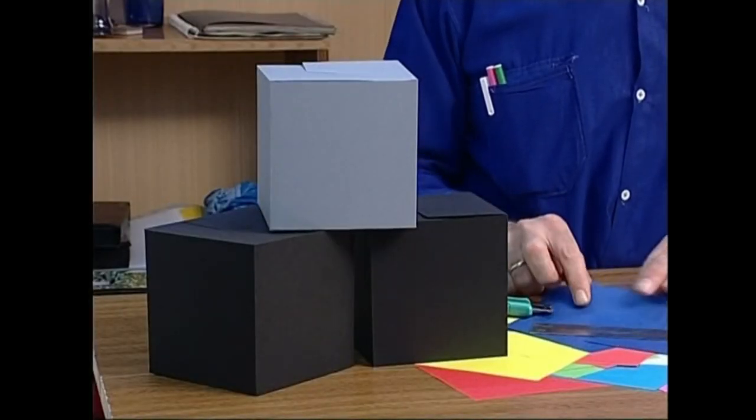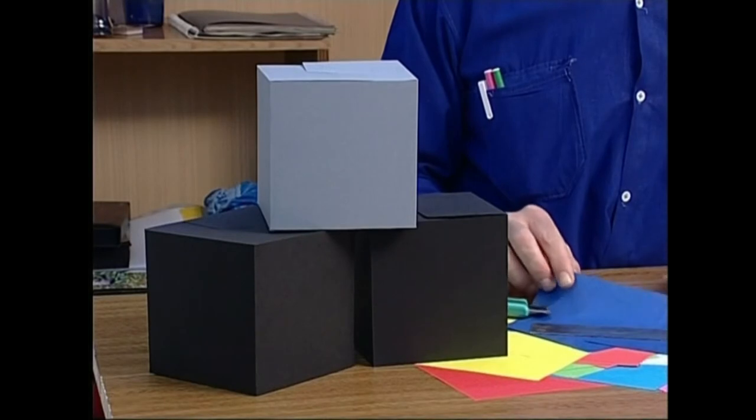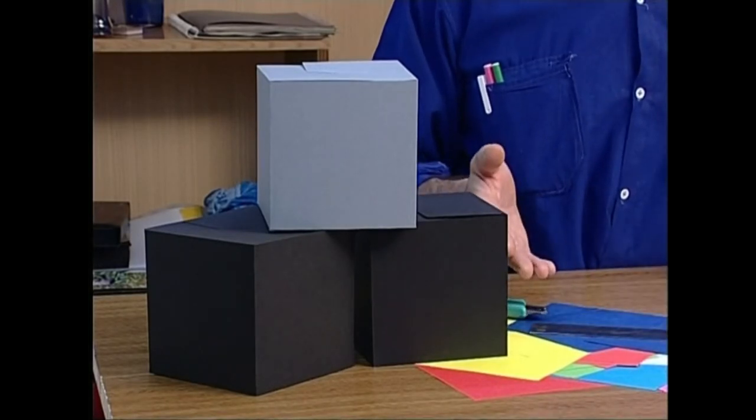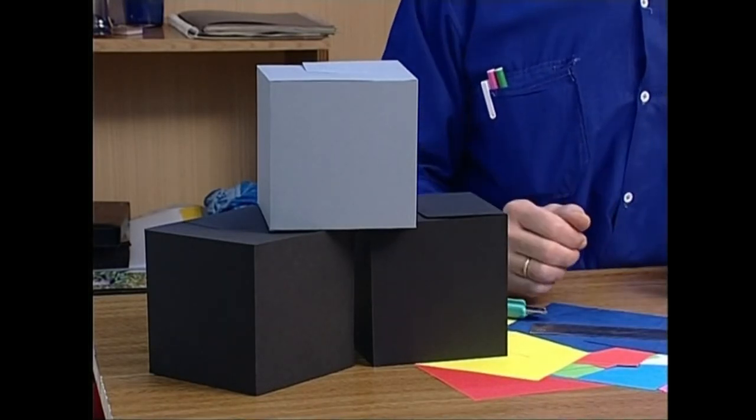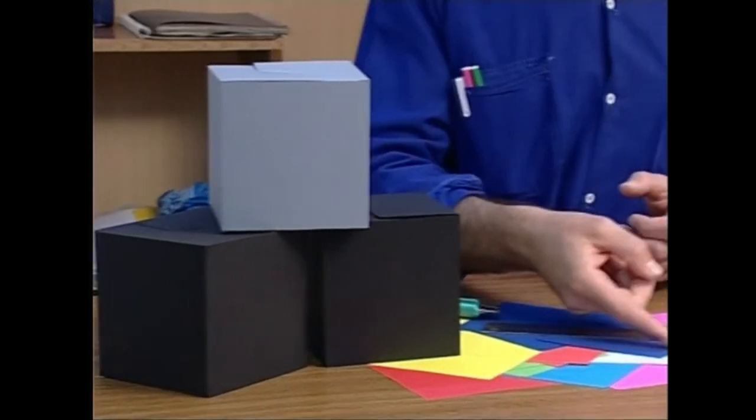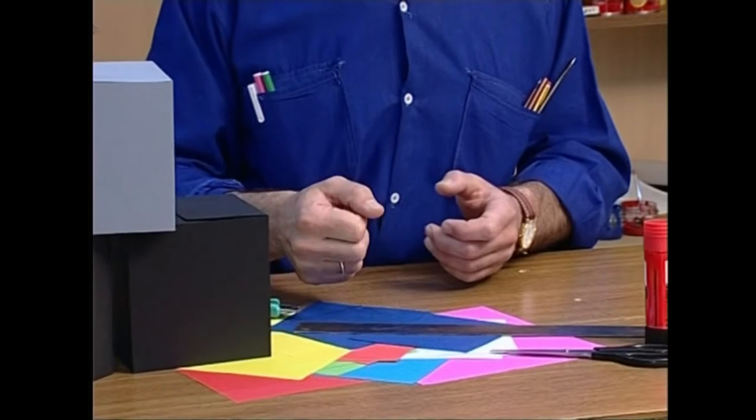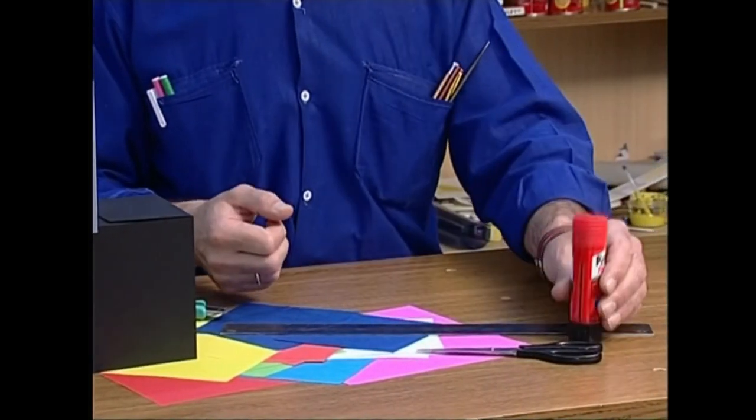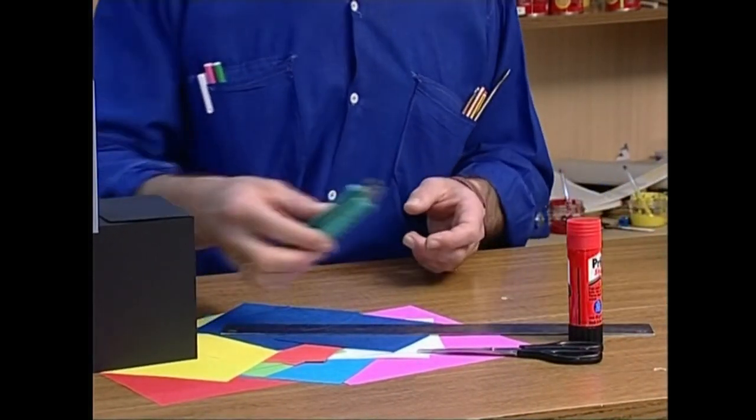Esperimentu hauek egiteko onako material hauek behar ditugu. Kartoizko iru kubo txiki, bi beltz eta gris bat. Kolore primarioez eta osagarriez margotutako paperak. Lekeda, labana eta erregela.